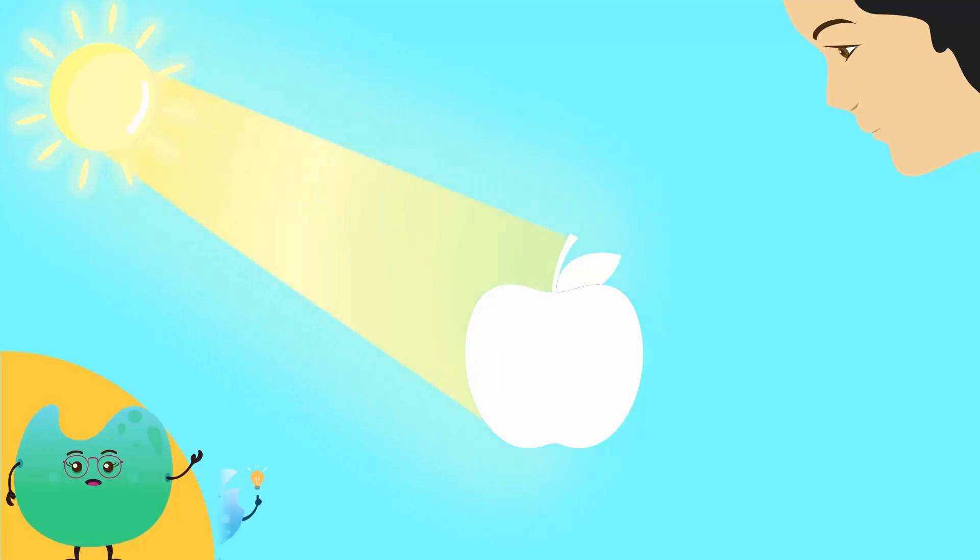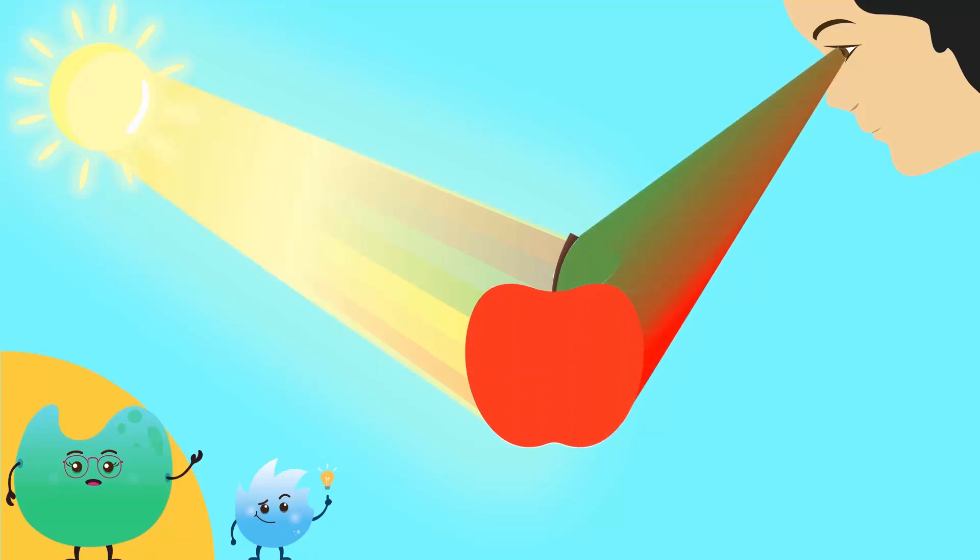Light from the sun or even a bulb consists of a whole spectrum of colors: red, orange, yellow, green, blue, indigo, and violet. When light hits an object, each color hits that object, but only the actual colors of the object are reflected. The rest are absorbed. The colors that get reflected are the colors of that object.